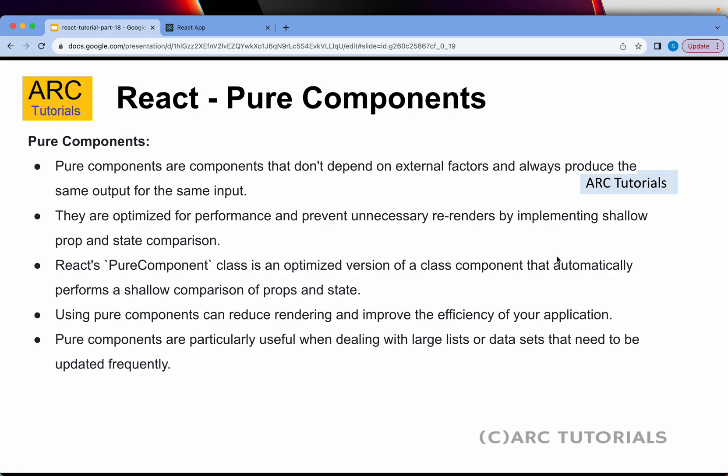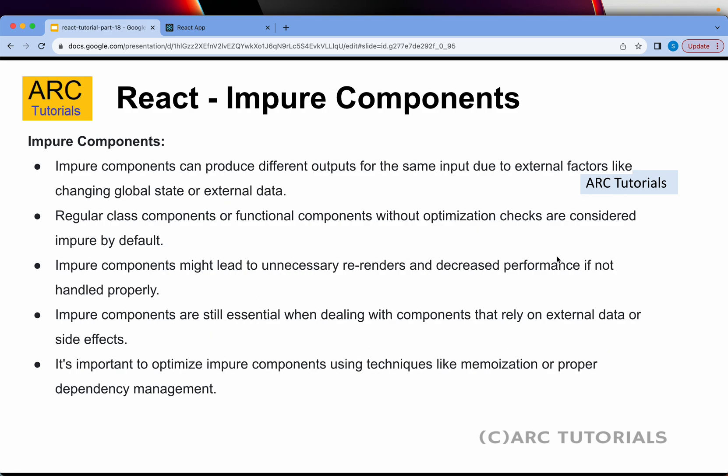Impure components can produce different outputs for the same input. This can happen for various reasons — for example, if the global application state has changed, many components will be affected. Regular class components or functional components without optimization checks are considered impure by default.